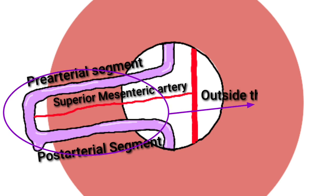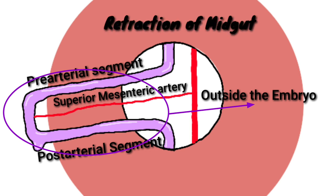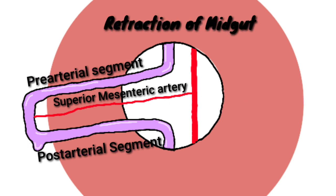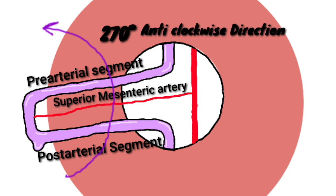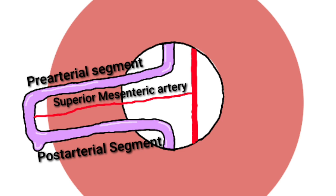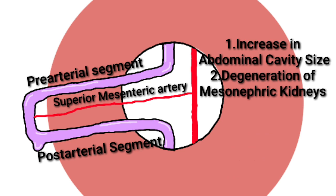The midgut is outside the embryo but it has to go inside the embryo. The process is called retraction of midgut. During this retraction process, the midgut undergoes a rotation of 270 degrees in the anti-clockwise direction. This retraction occurs because the abdominal cavity will increase in size and also the mesonephric kidneys will degenerate, because in humans only metanephric kidneys are permanent.